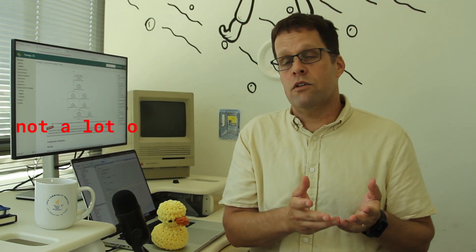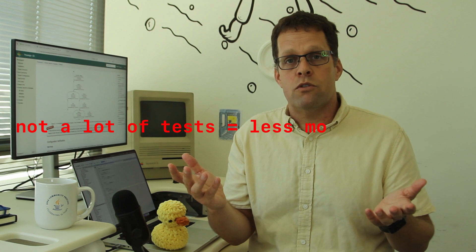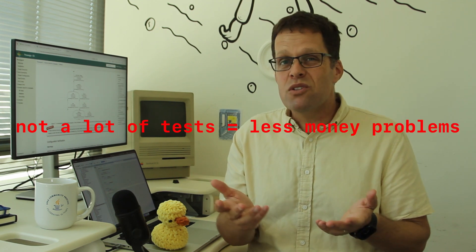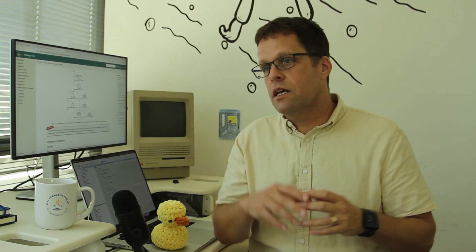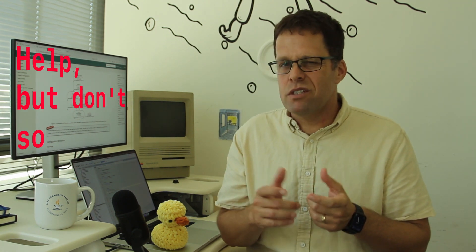That makes software teams choose between good test coverage and being agile. Because if you have a lot of tests, then you have good coverage, good quality and whenever change comes along, you also have a maintenance problem. And if you don't have a lot of tests, then changes don't cost much. But you also have a quality problem.